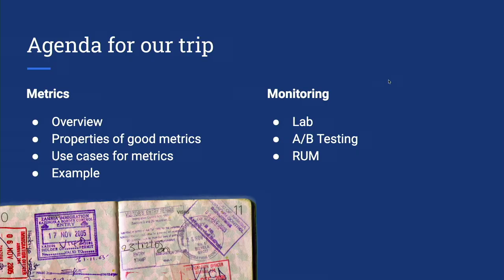Here's our agenda for our trip to the isle of browser vendor, or just my little corner — there's a lot going on that we won't be able to get into. First we're going to talk about metrics and the work the speed metrics team has done: what makes a good metric, what are the use cases, and I'll go over an example of developing one. Then I'll talk about monitoring metrics in the lab and in the wild, and some things I've learned over the years about tracking down regressions.